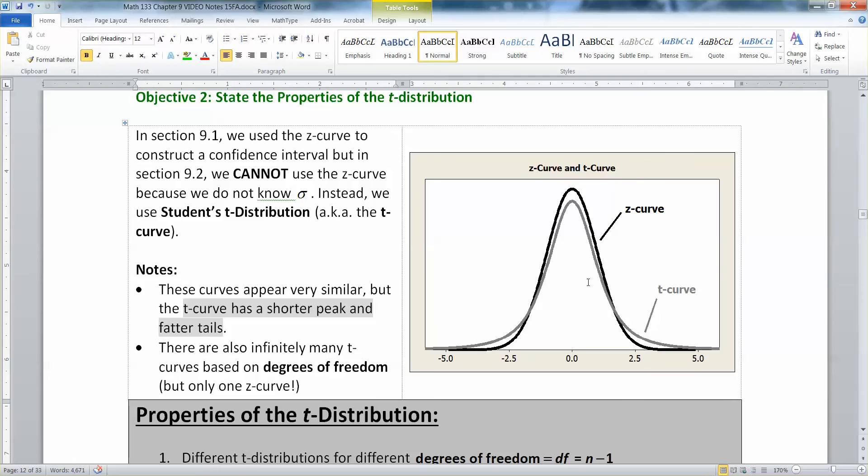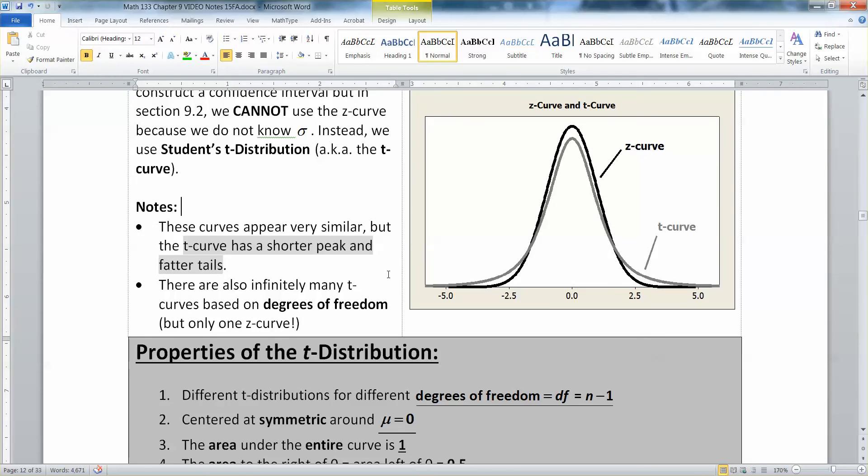Now, the thing about the T curve is it depends on degrees of freedom, which for our purposes is going to be dependent upon how big your sample is. But there's only one Z curve, the standard normal curve. It's got a mean of zero, standard deviation of one. It's the best.